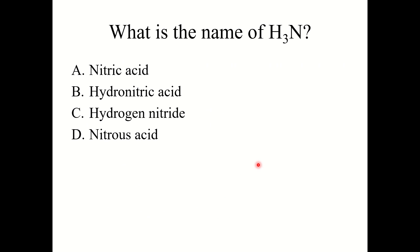One more knowledge check: what is the name of H3N? The answer is C: hydrogen nitride. If you're working with one of these binary acids and you don't see (aq) listed, name it like a simple binary ionic compound.